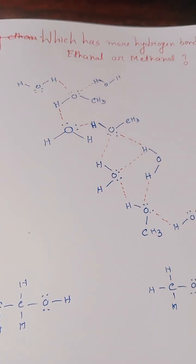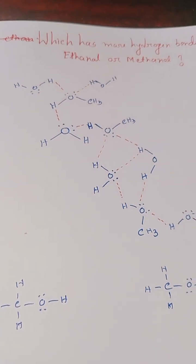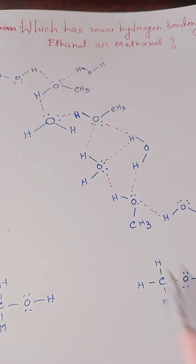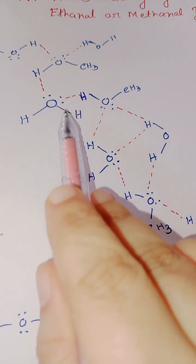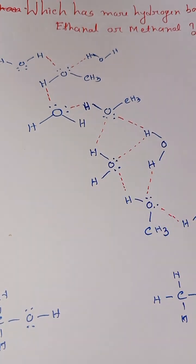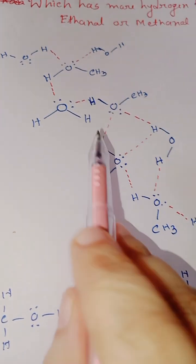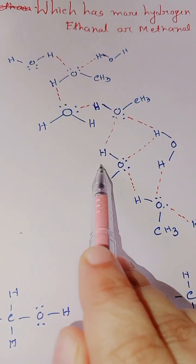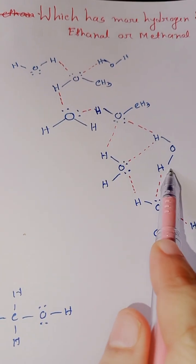The number of hydrogen bonds forming depends on the number of lone pairs present on the oxygen atom. Now look into this molecule. This is a methanol molecule. I have added water into methanol. This oxygen has two lone pairs, so these two lone pairs can make hydrogen bonds with two water molecules.